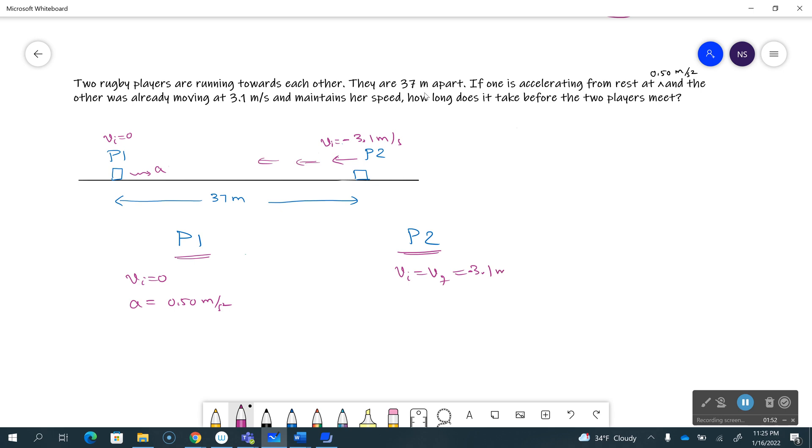Minus is important, and I can also call this x equals zero for player one. So I'll say the initial position for player one is zero and this is x equals 37 meters, so that's the initial position for the second player. And of course the initial player has no acceleration, so a is zero.